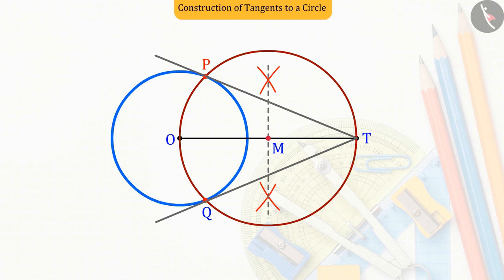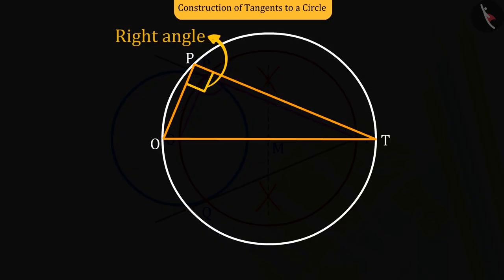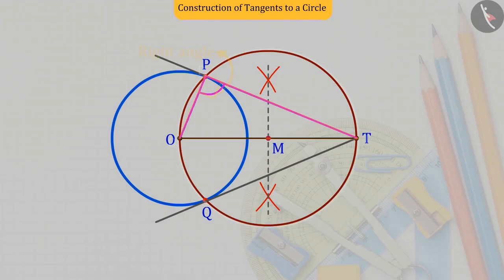Matching point O with point P, which gives us the line segment OP, which is the radius of the circle. So now you can see that the angle TPO is an angle formed in a semicircle. And we know that the angle formed in a semicircle is a right angle.